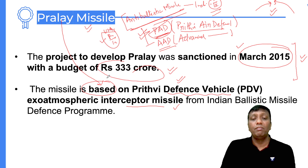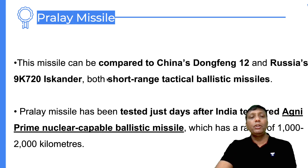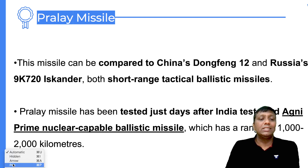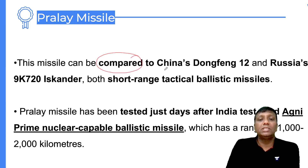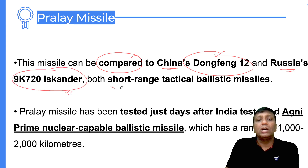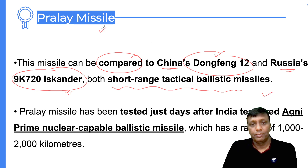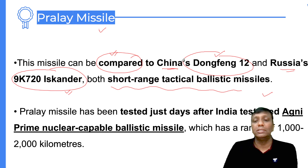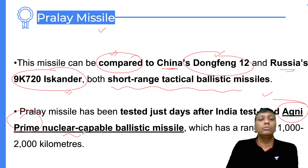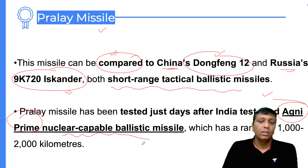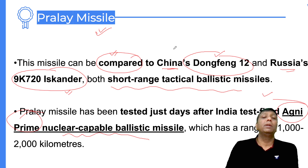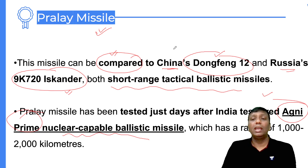If you compare the Pralay missile with missiles of other countries developed similarly, the Chinese equivalent is the Dong Feng-12 and the Russian equivalent is the 9K720 Iskander — both are short-range tactical ballistic missiles, similar to the Pralay missile. Additionally, around the same time period, India also tested the Agni Prime missile, which is capable of carrying nuclear warheads, with a range of 1000 to 2000 kilometers. These close test timings show India's growing interest in the defense sector.